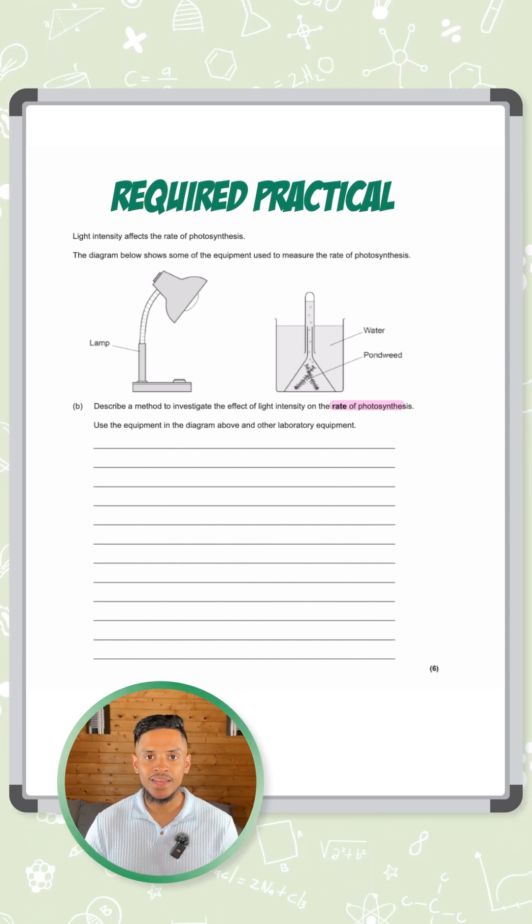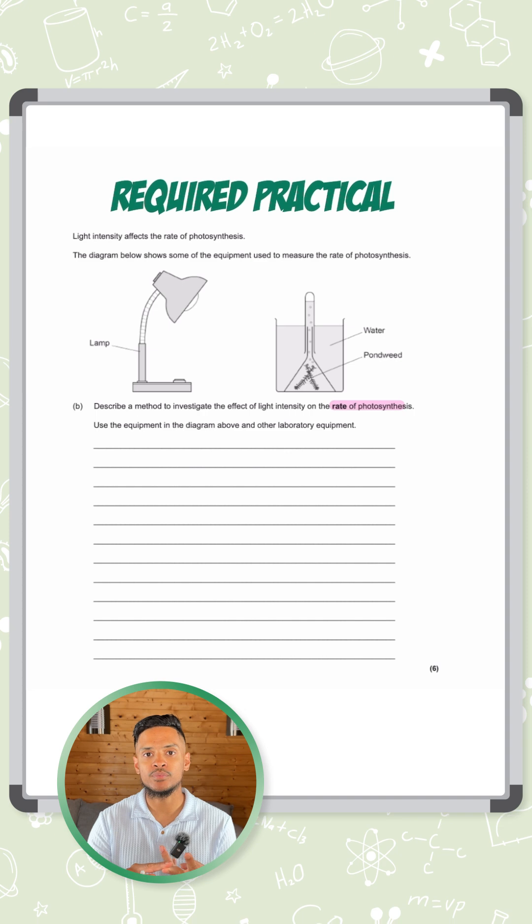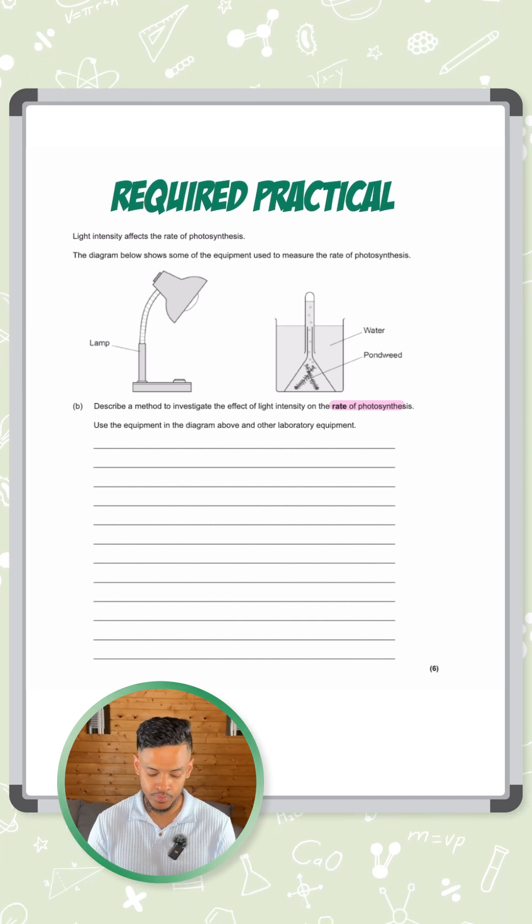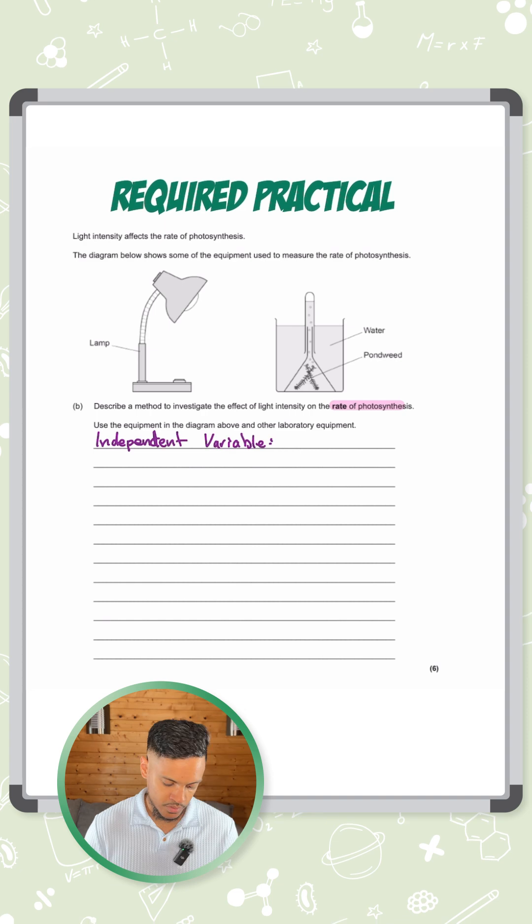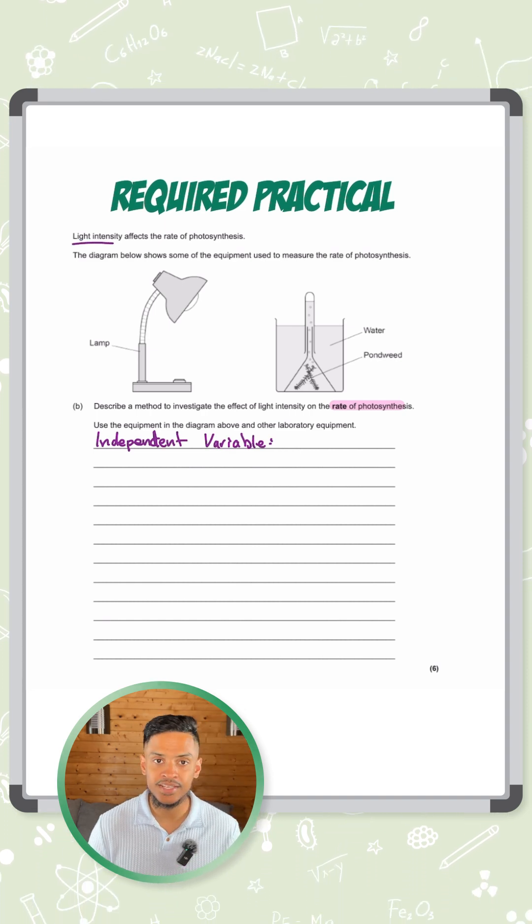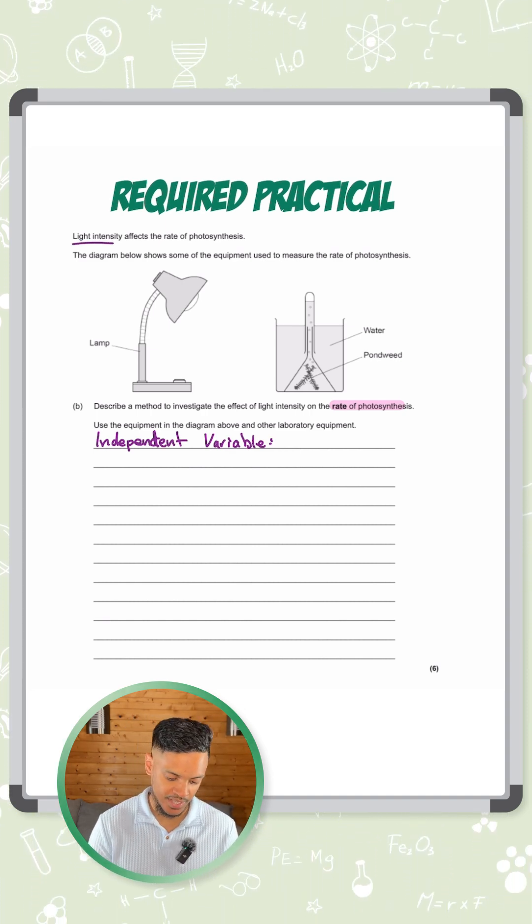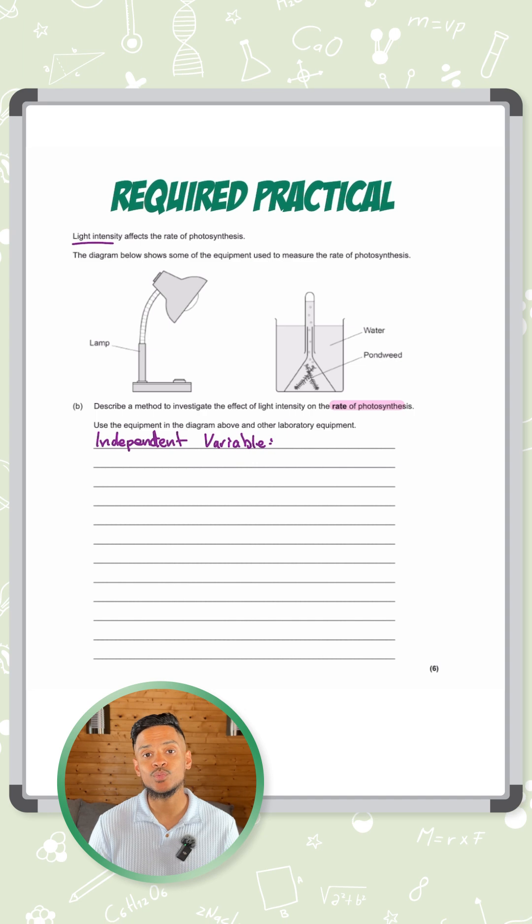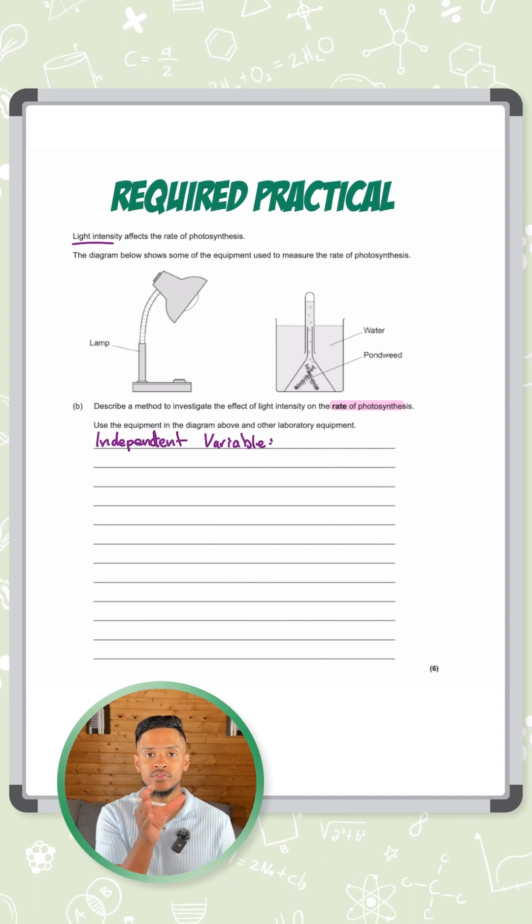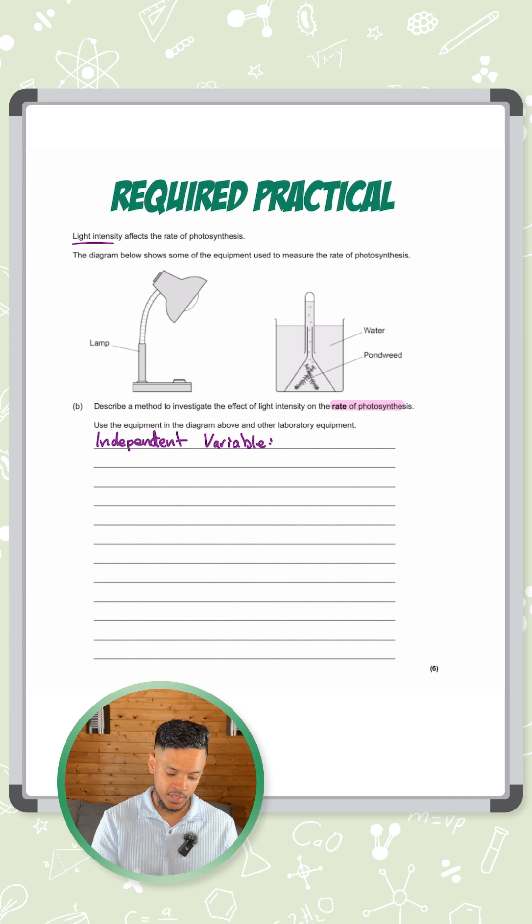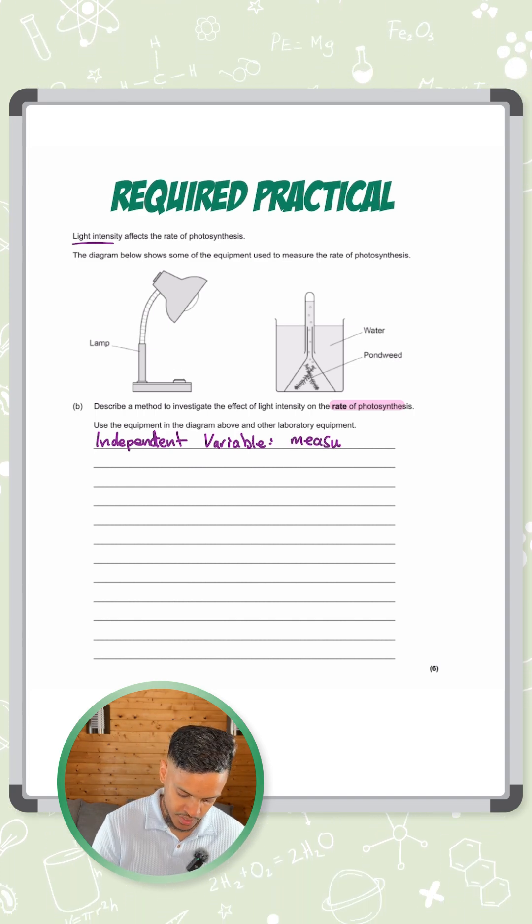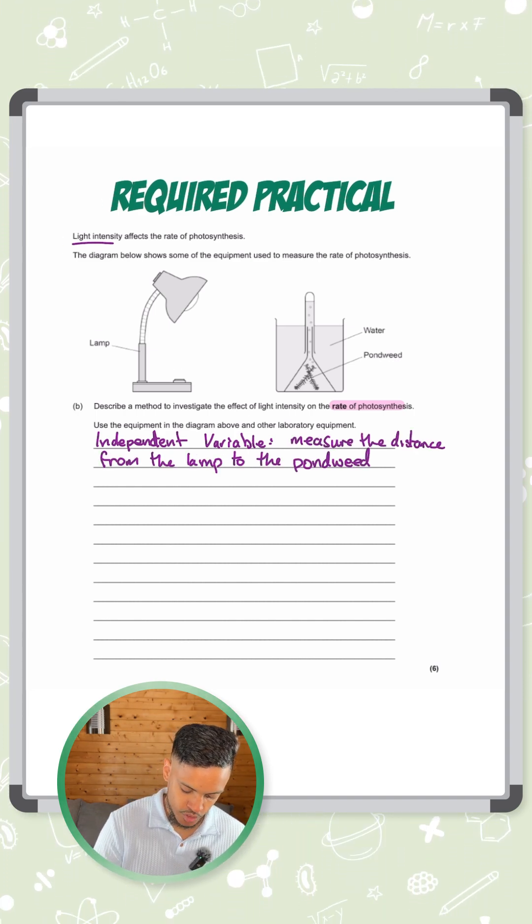Let's talk about independent variables, dependent variables and controlled variables. Independent variables - what are we changing? This question is all to do with light intensity. We need to change the intensity of light. Easiest way to do that is to move the lamp closer to the pondweed and further away. We're going to measure the distance from the lamp to the pondweed.